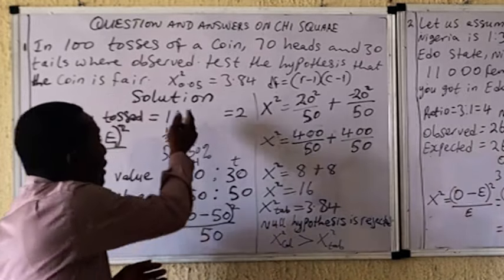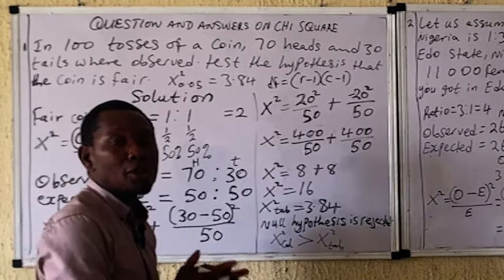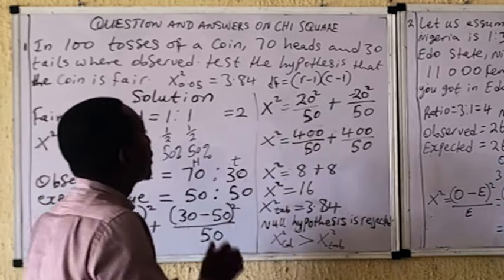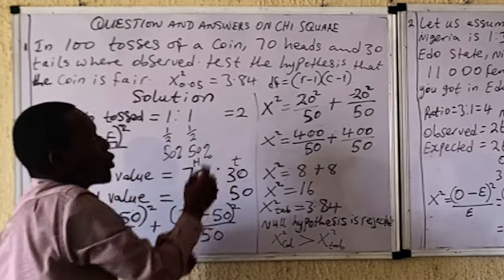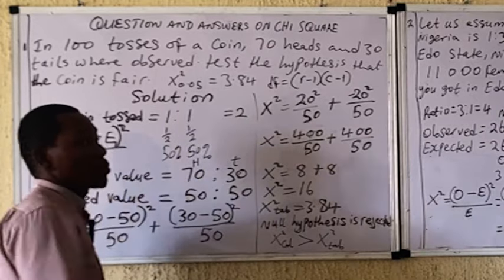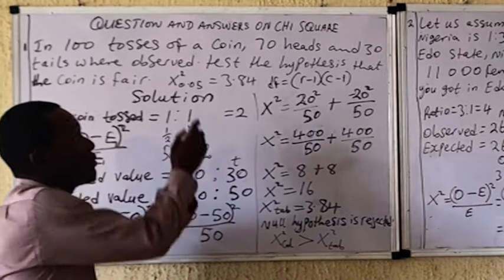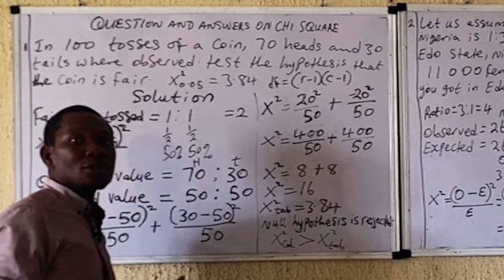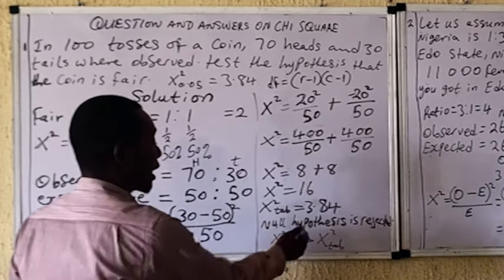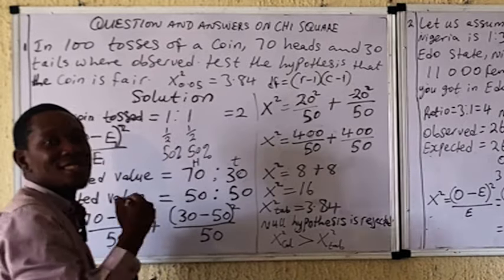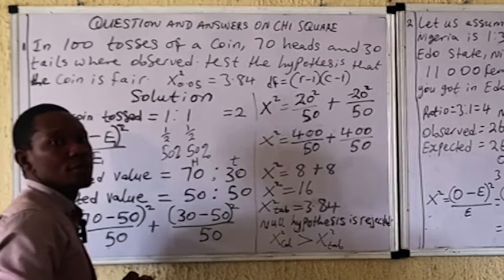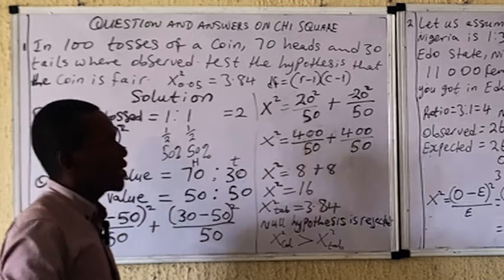At the beginning of any chi-square calculation, you must always state your null and alternate hypotheses. In this case, the null hypothesis is that the observed value is not different from the expected value. The alternate hypothesis is that the observed value is significantly different from the expected ratio of 1:1. We conclude that the observed value is significantly different from the expected ratio of 1:1.